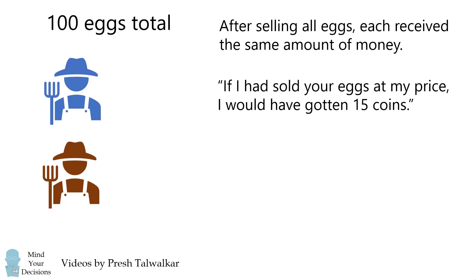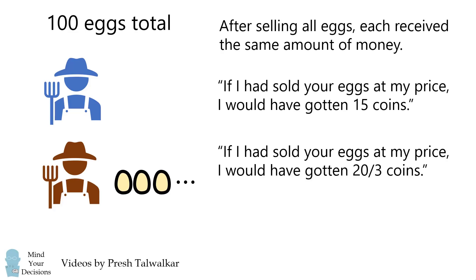The second farmer then replies, well, if I had sold your eggs at my price per egg, I would have gotten a total of 20 over 3 coins.